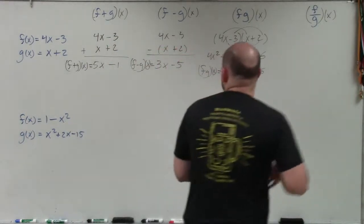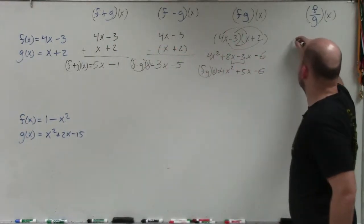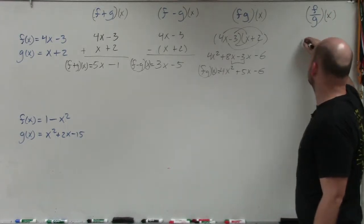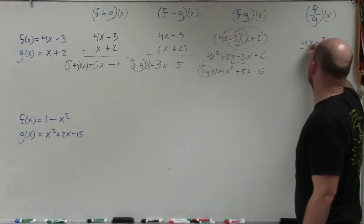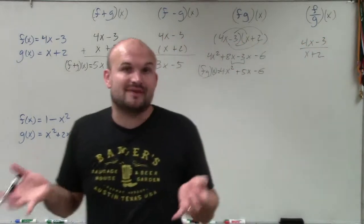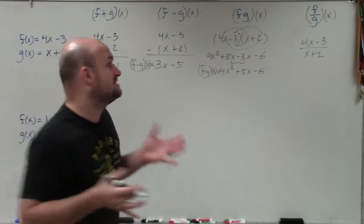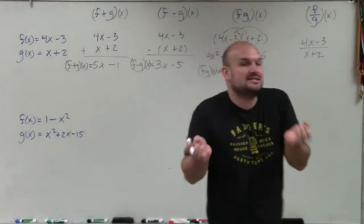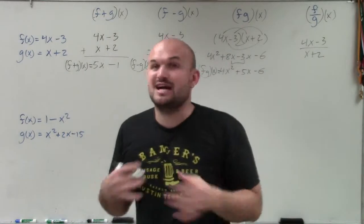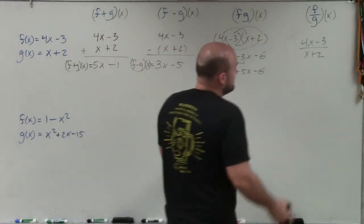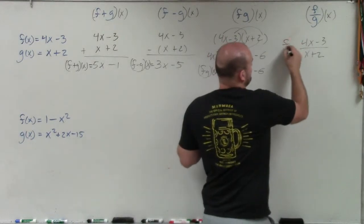And then the last one is going to be division. So if I was going to do f divided by g of x, I'm basically just going to divide one over the other. So it's 4x minus 3 over x plus 2. Now, I can't divide the x plus 2. Remember, you have to be able to divide the whole denominator. You just can't say the x's divide out or the 2 divides in. They're terms that are separated by addition and subtraction. We can't divide across addition or subtraction. So I'm just going to have to leave it like this.